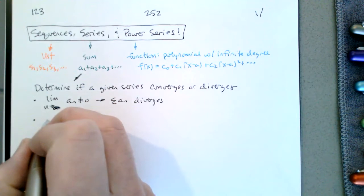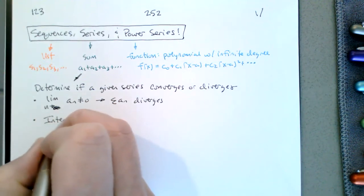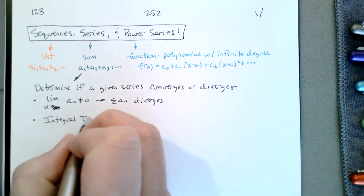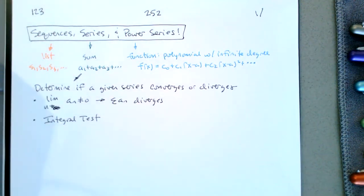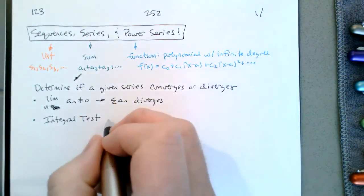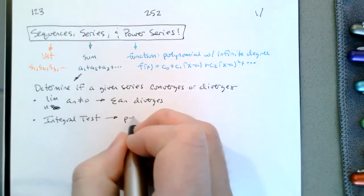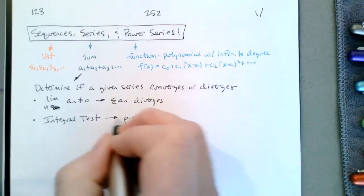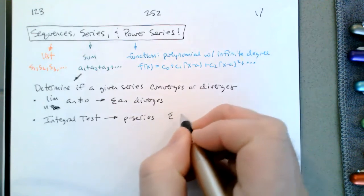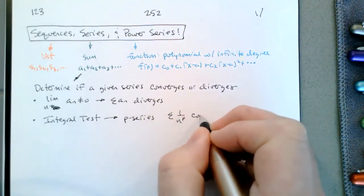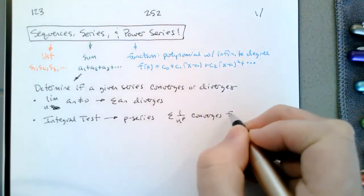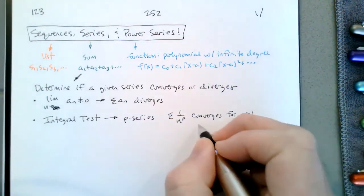Next, we have the integral test. This is where we look at the terms of the series, make a continuous function out of them, and look at the improper integral. If the improper integral converges, then the series converges. The important result of the integral test was p-series, where the series 1 over n to the p converges for p strictly greater than 1, and diverges otherwise.